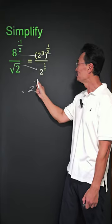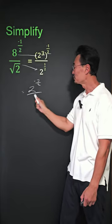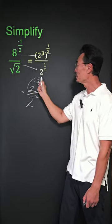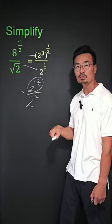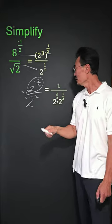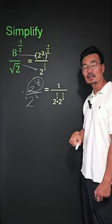So we have 2 to the negative 3 over 2 power over 2 to the half power. And to combine, we always want to take the one with the smaller exponent to the one with the bigger exponent. So then we have 2 to the 3 over 2 on the denominator.